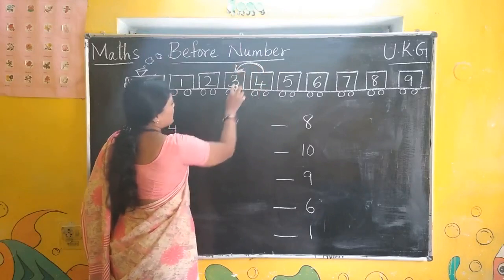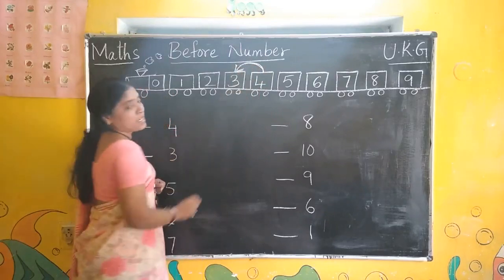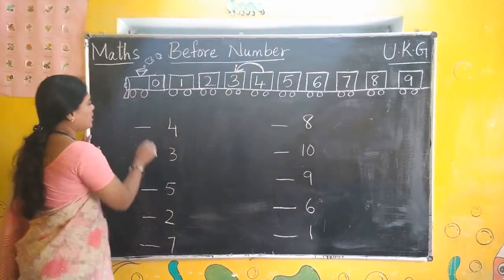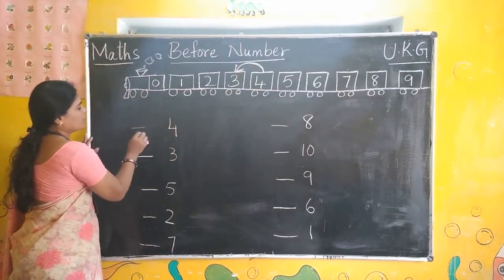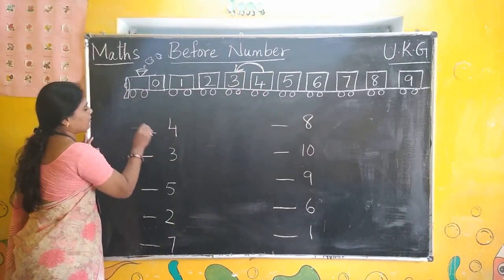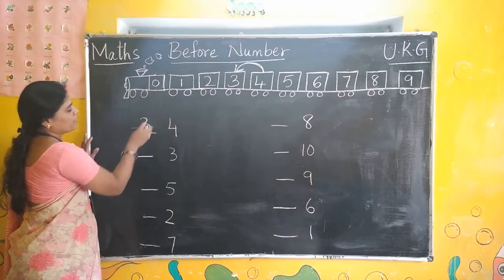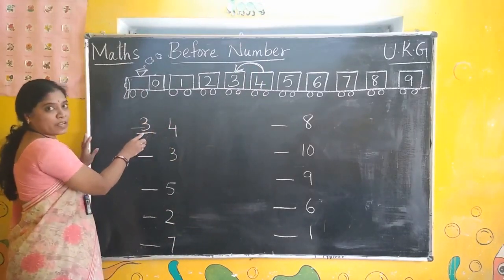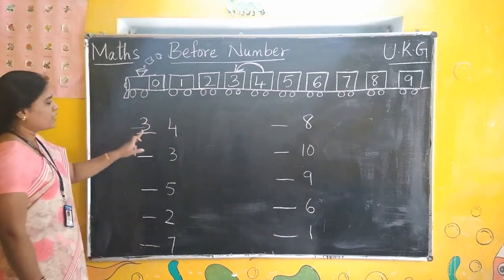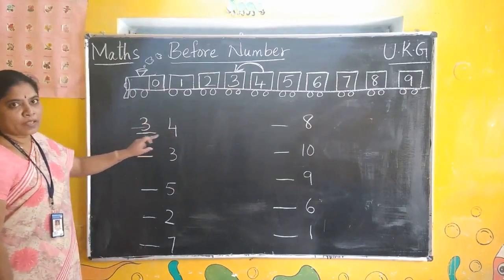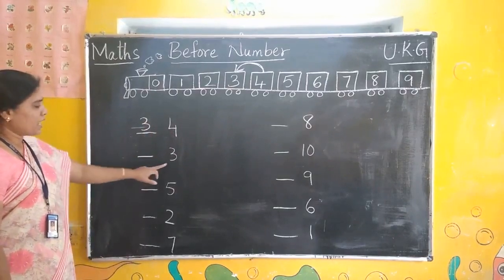What is this number? 3. Write down 3 here. Before 4, number 3 comes. 3, 4.